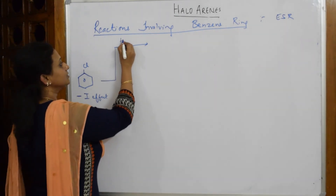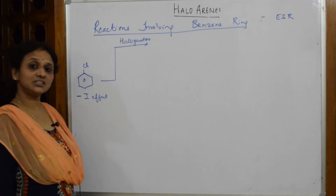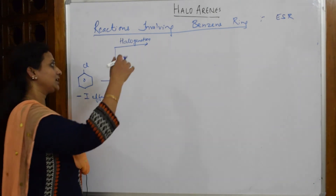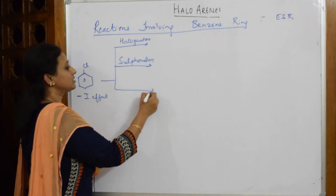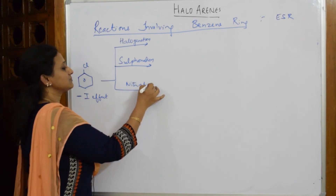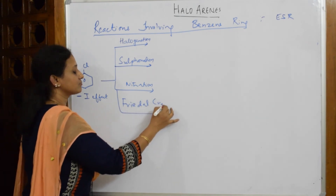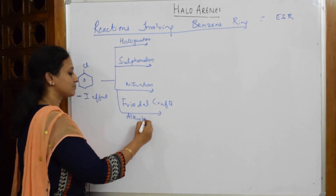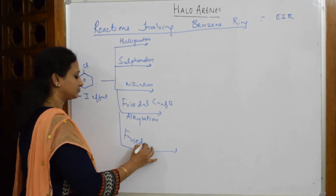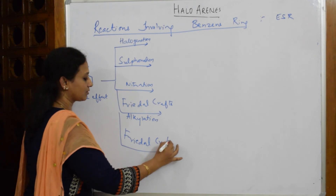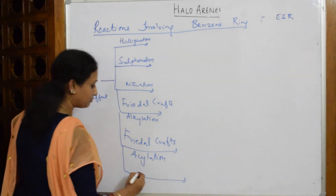Let us list out all the electrophilic substitution reactions, same as in 11th grade: halogenation, sulfonation, nitration, Friedel-Crafts alkylation, Friedel-Crafts acylation, and benzoylation.